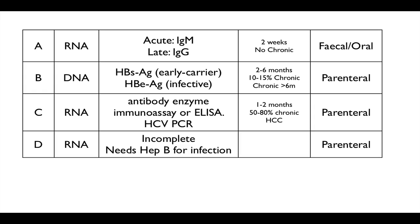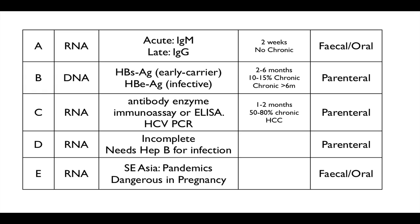Hepatitis D is incomplete — it needs to go along with hepatitis B and does not exist by itself. Hepatitis E is again an RNA virus found in pandemics in South East Asia. It is very dangerous in pregnancy, causes a similar picture to hepatitis A, and is usually self-limited.